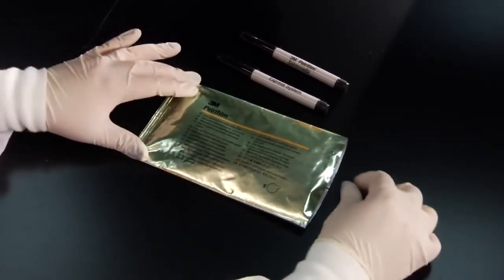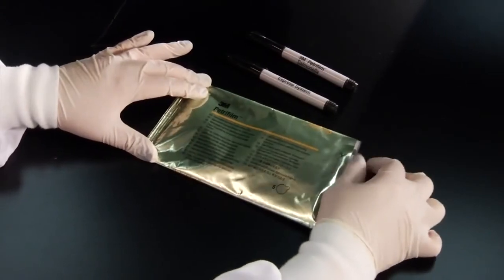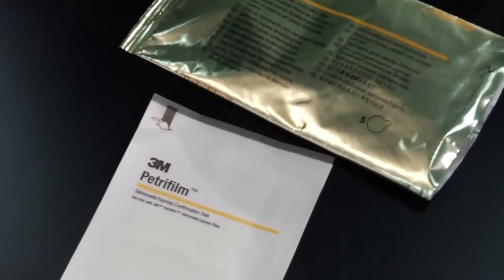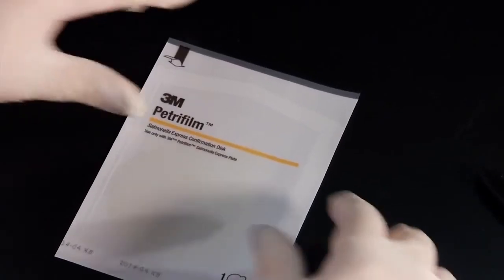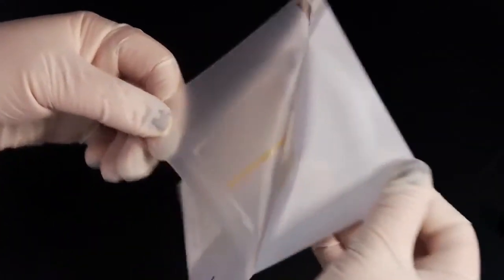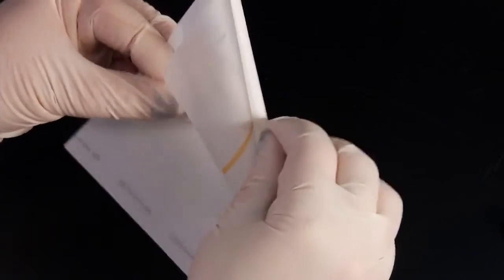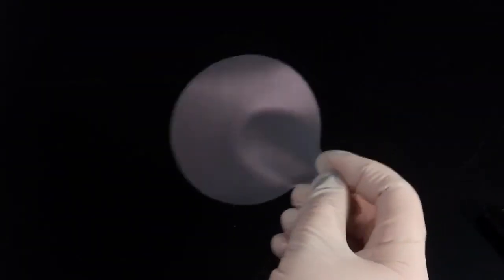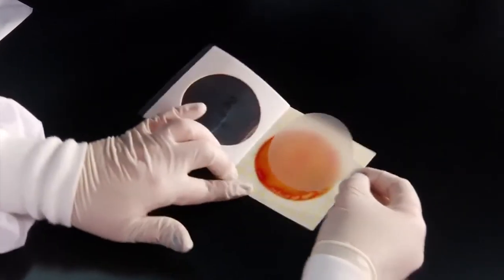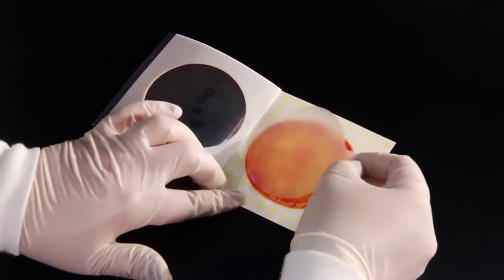To begin biochemical confirmation, remove an individually packaged 3M Petrifilm Salmonella Express Confirmation Disc from its pouch and allow it to come to room temperature. Peel the package to expose the disc's tab. Grasp the tab and remove the disc. Insert the disc by rolling it onto the gel so that you avoid trapping air bubbles. Then close the plate.